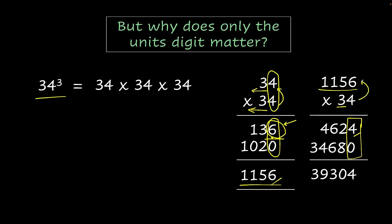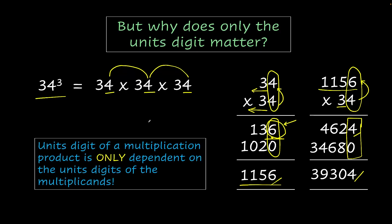So again, 4 times 6 is 24, the last digit of this multiplication only depends on these two units digits. So this number is only dependent on these two digits. So this means that any multiplication, the last digit is only going to depend on the units digit of the numbers of the multiplicands. So 4 times 4 times 4 is going to be the same as 34 times 34 times 34 for the units digit of the cube. So the units digit of a multiplication product is only dependent on the units digit of the multiplicands.